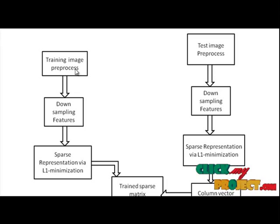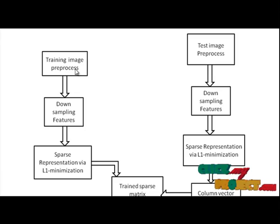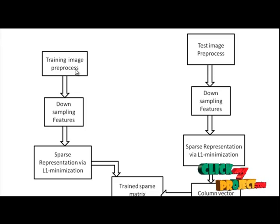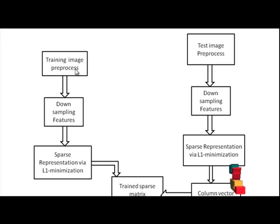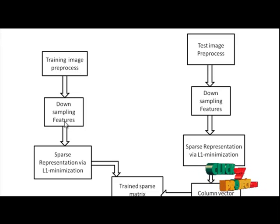Here we are using a median filter to remove the noises. A median filter replaces each pixel value in an image by the median of its neighborhood. In the preprocessing step, image enhancement, smoothing, gradient, and normalization are also done. The next step is feature extraction.